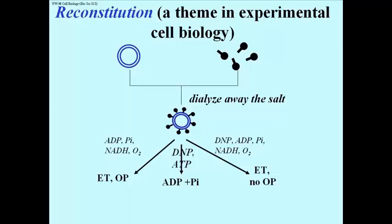In the presence of DNP and NADH and oxygen, there would be electron transport. But even if ADP and inorganic phosphate were also added, no ATP would be made.